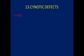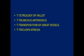The thirteenth mnemonic is for cyanotic defects in congenital heart disease: the four T's. T for tetralogy of Fallot, T for truncus arteriosus, T for transposition of great vessels, and T for tricuspid atresia.